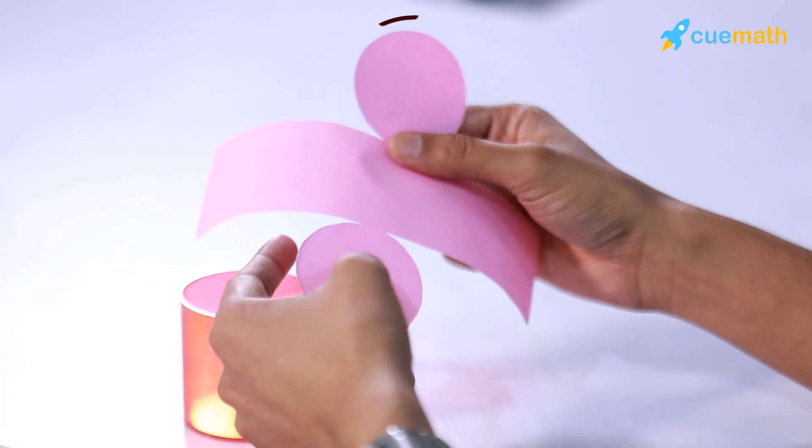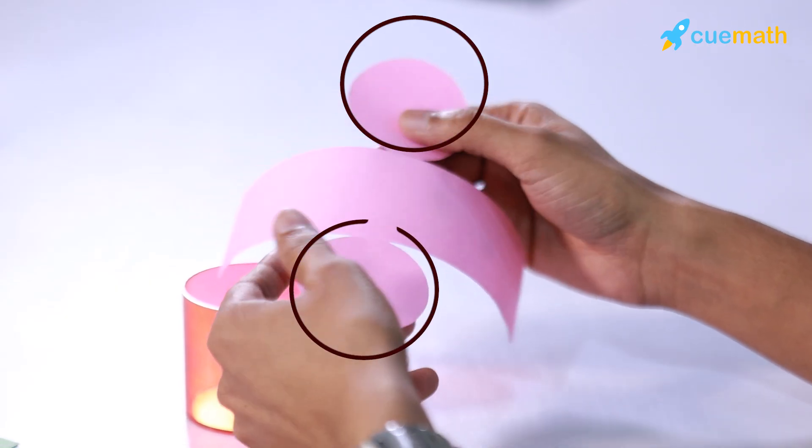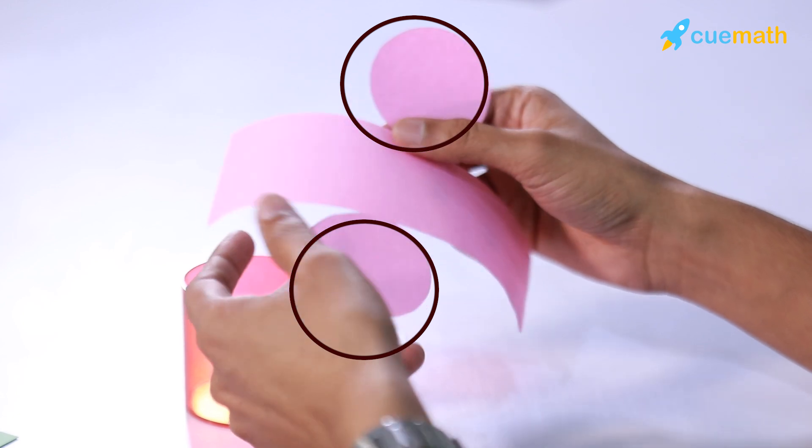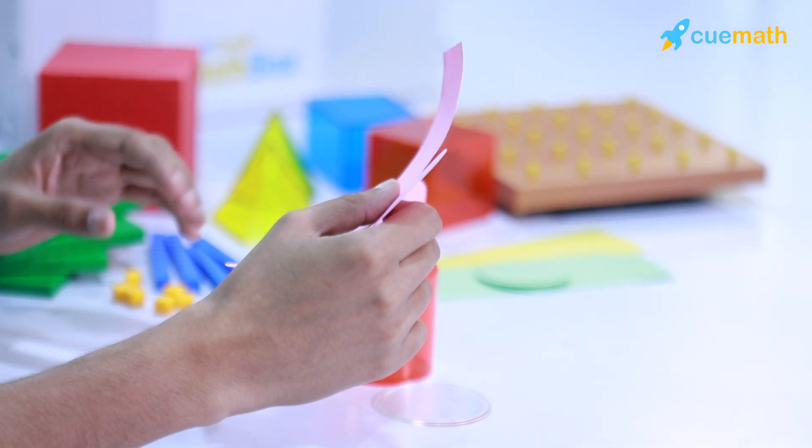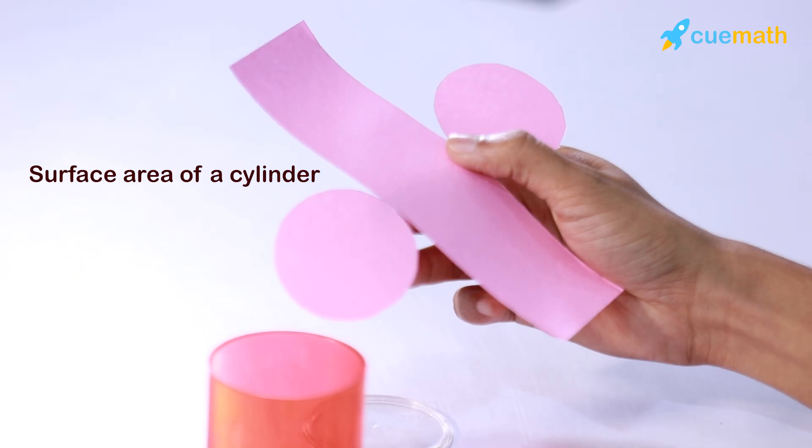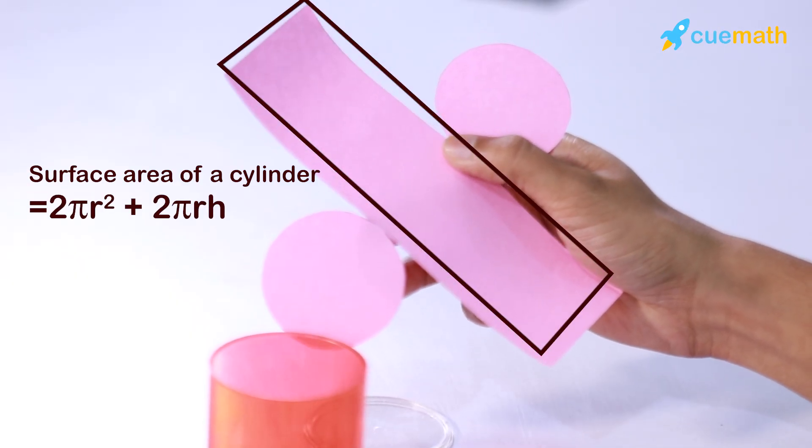So the area of the rectangle is 2πrh. Add that to the two circles, which are simply the top and bottom faces of the cylinder, which is πr² and another πr². So the surface area of the cylinder is 2πr² + 2πrh, or 2πr(r+h).